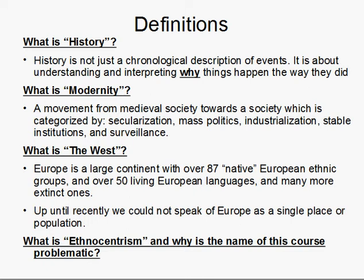Secularization means a society where religion no longer plays a dominant role. Mass politics means a society in which most people have some political power or an ability to make political decisions. Industrialization: a world dominated by industry, by machinery, by production. Stable institutions — things like governments, parliaments, police, education — they are institutions that define our society. And surveillance means that in modern society, people are more and more observed, whether by their governments, by corporations, or by simply other people.